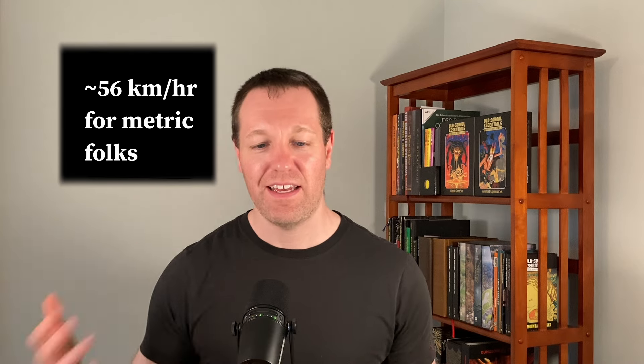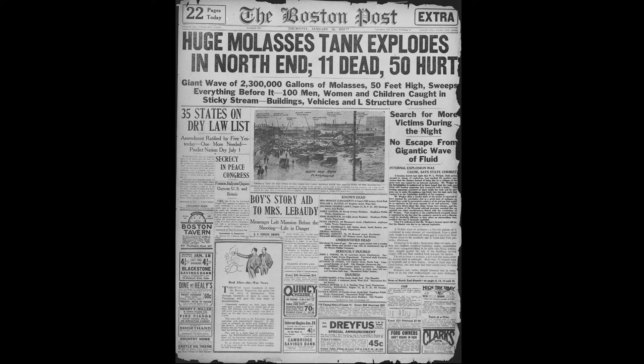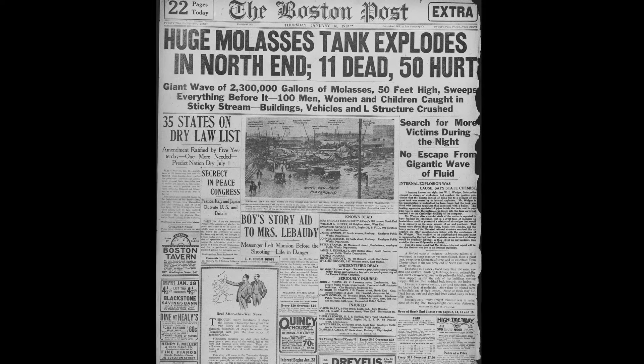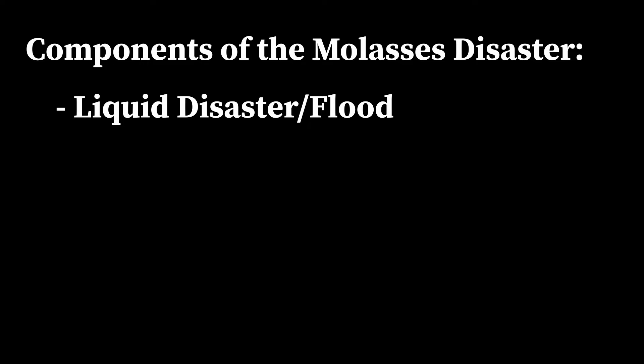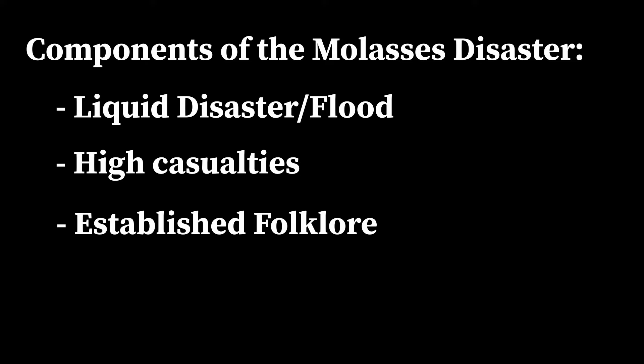Let's take a look at one more. In 1919, a storage tank in the north end of Boston, Massachusetts, burst. The contents — 2.3 million gallons, that's 8,700 cubic meters — of molasses rushed through the streets of Boston at an estimated 35 miles an hour. It ended up killing 21 people and injuring another 150. Residents reported for decades later that on hot summer days, they could still smell the residual molasses. Distilling this down: we have a disaster, a liquid disaster — essentially a flood — significant casualties, and established folklore around this disastrous event.